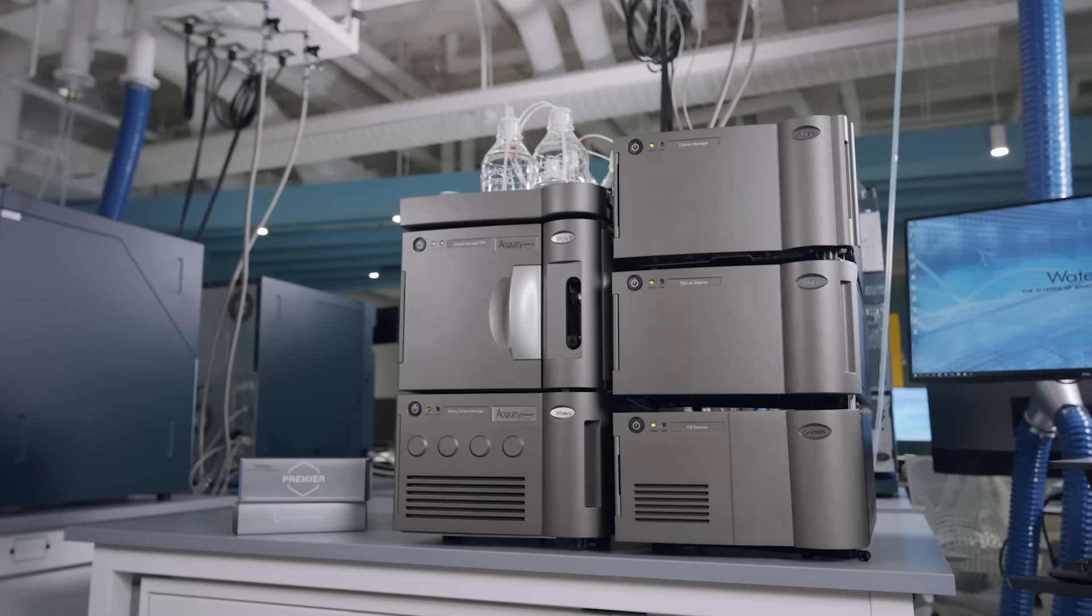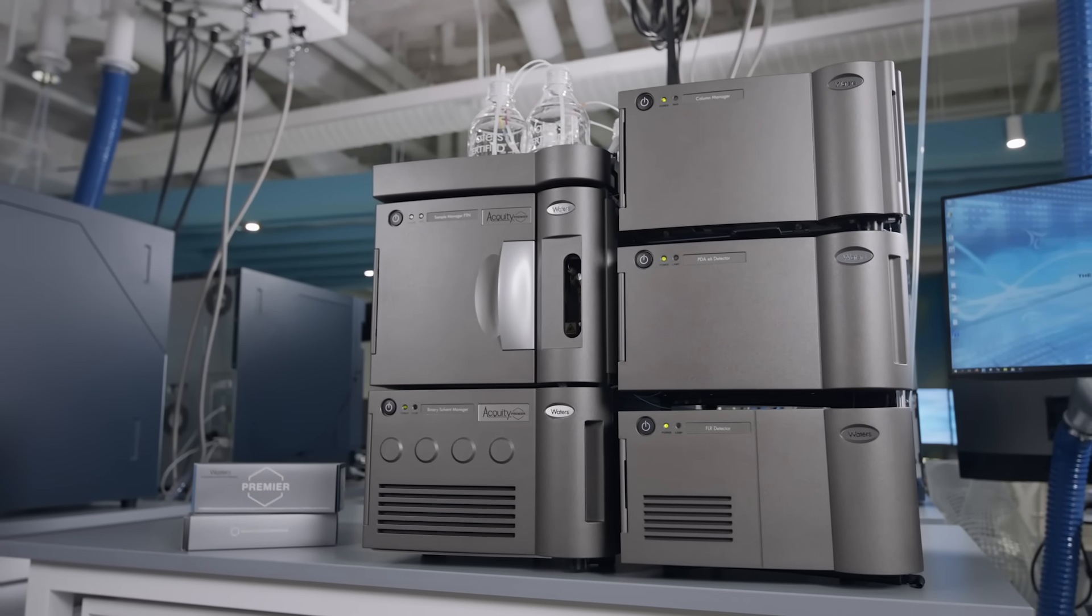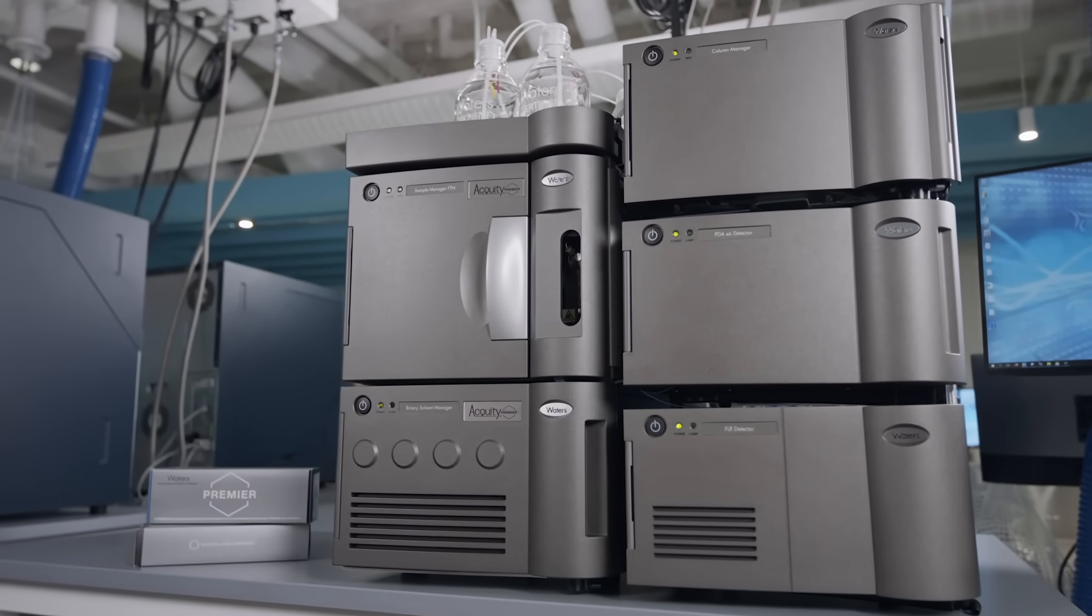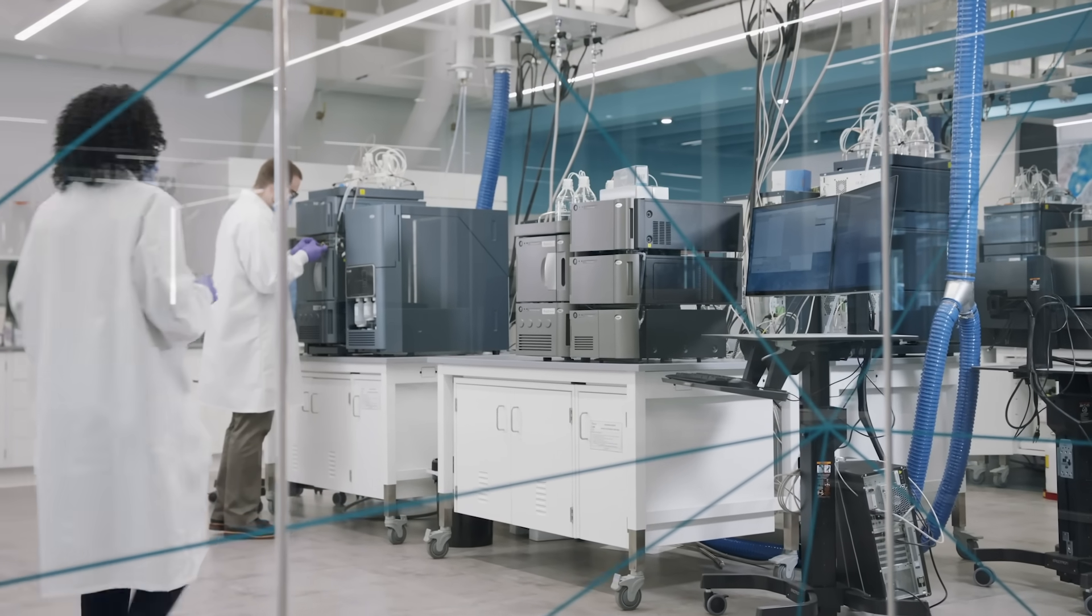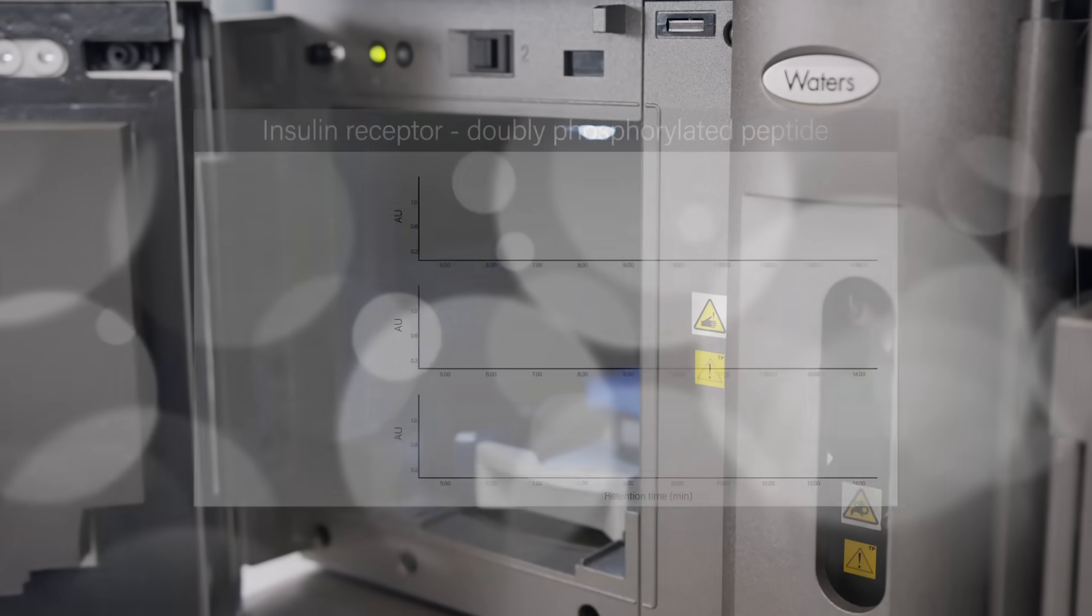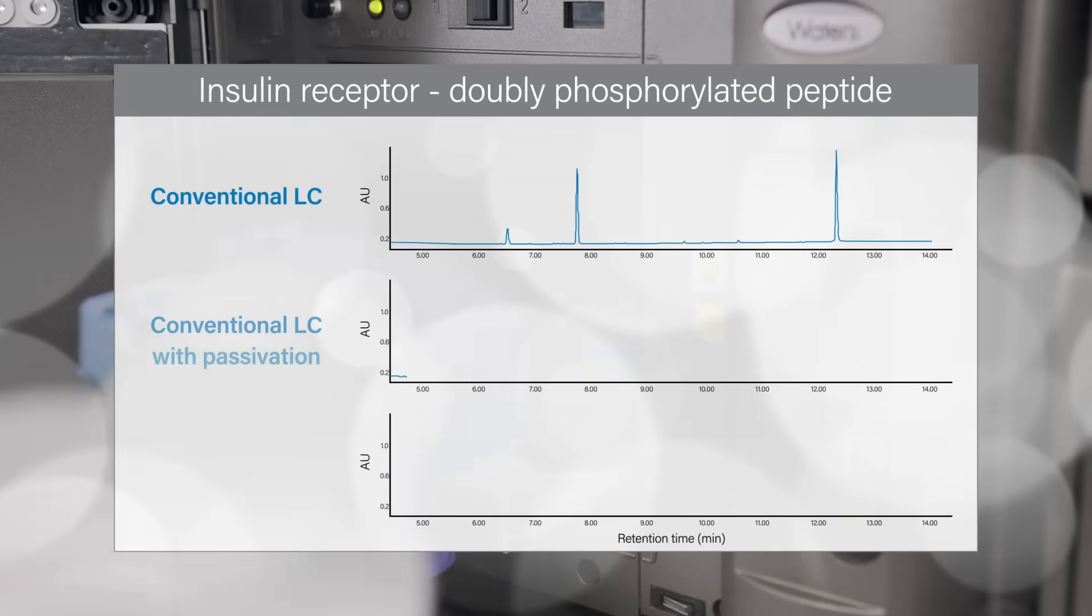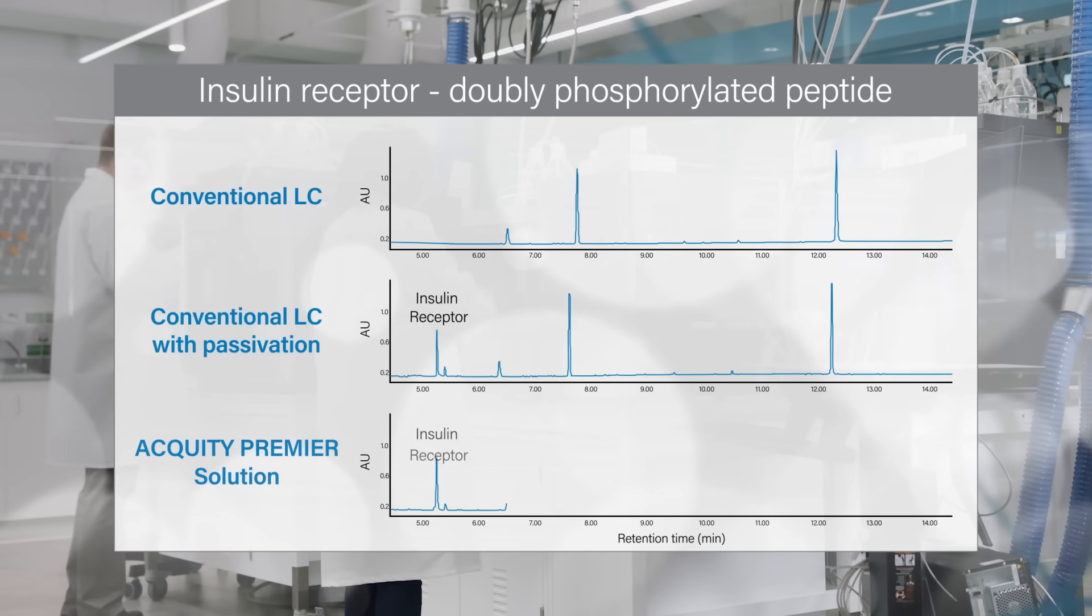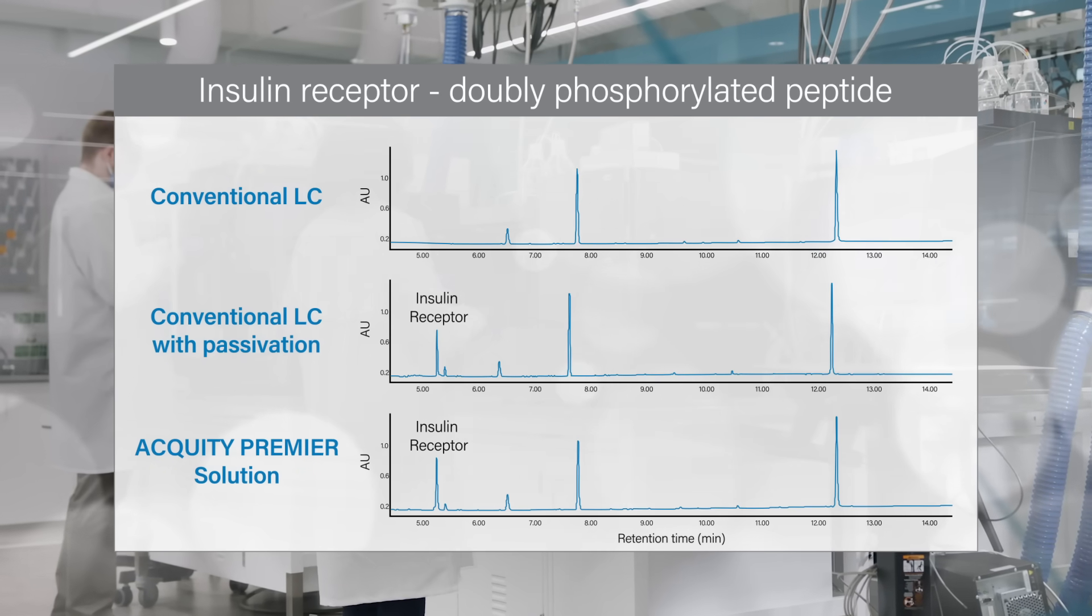What if you could easily solve these challenges without sacrificing performance or time? With Waters Acuity Premier LC system and Premier columns, you will detect sample components from the very beginning, improving lab productivity and reducing expensive and time-consuming method troubleshooting.